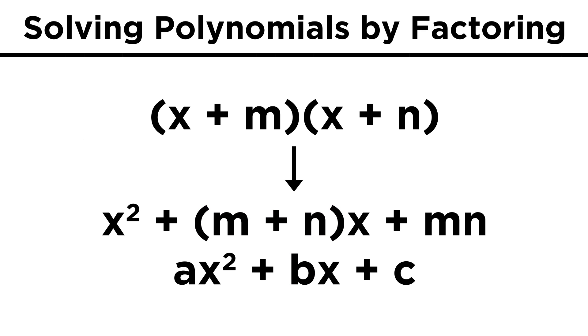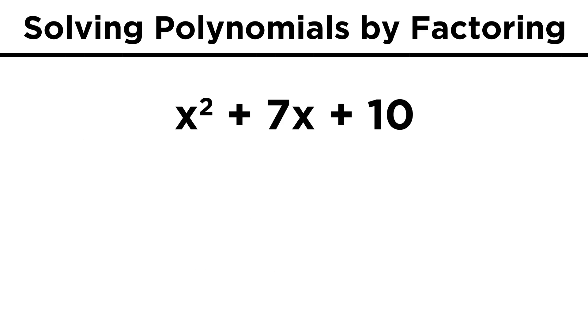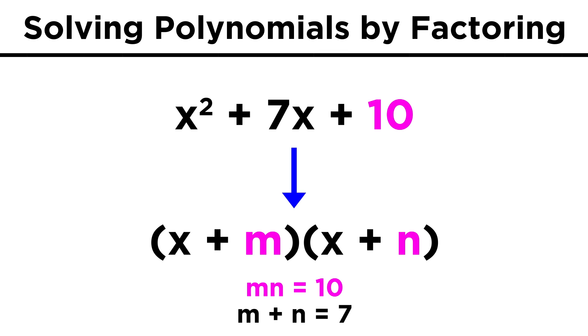Let's do an example, and I'll show you what I mean. Take x² + 7x + 10. Because the first term is x², the binomials can both start with x, so we just have to figure out which numbers go in these two spots. The two numbers must multiply to give ten, and add to give seven.